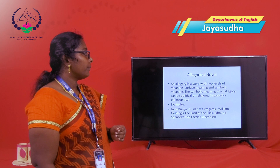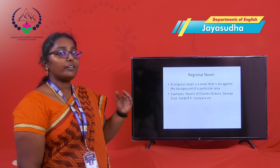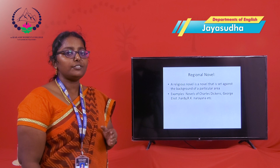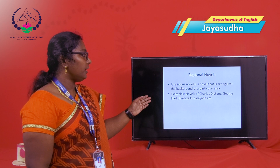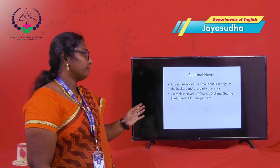Then we are looking at the regional novel. The regional novel is a novel set against the background of a particular area. Some authors have their own region reflected in their writings — authors like Charles Dickens, George Eliot, Thomas Hardy, R.K. Narayan, etc. For example, Thomas Hardy has Wessex as his region, and R.K. Narayan has Malgudi as his region.